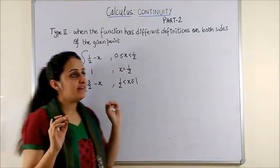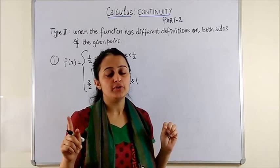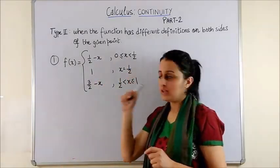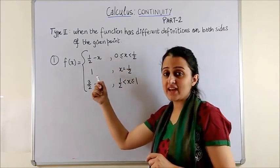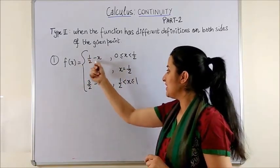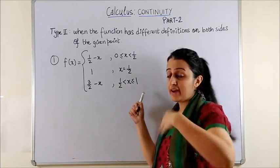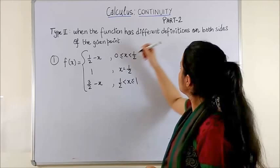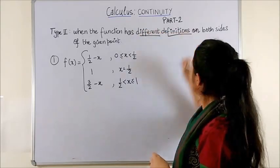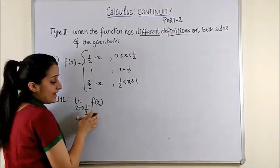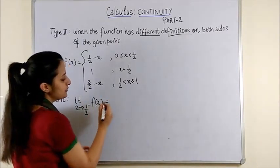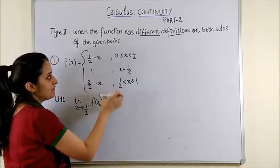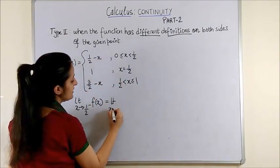So, let's see an example. Have a look at question number 1. You have to examine the continuity at the point half. Now, if you see on left hand side of half, we have half minus x as a function. On right hand side of half, you have 3 by 2 minus x as a function. So, you have two different definitions on both sides of the given point. When limit x tends to half from the left hand side, you do not have to really write x as half minus x this time because you have a function specially defined for this.